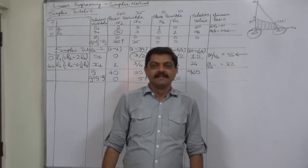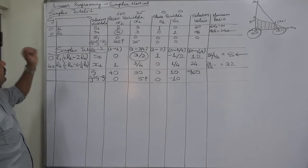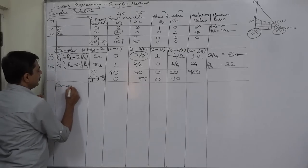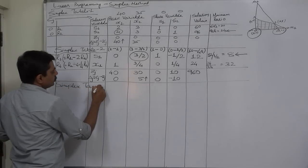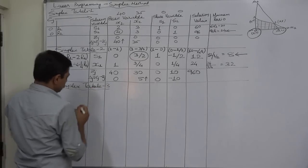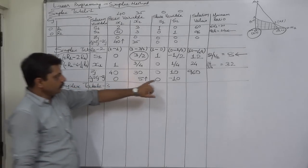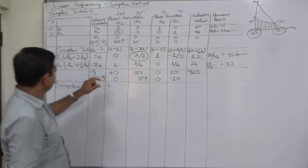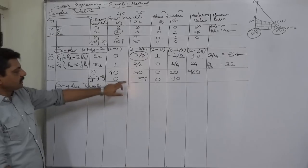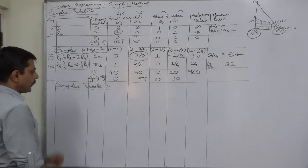Hello friends, welcome back. Now we are going to prepare simplex table 3. We have already prepared simplex table 1 and simplex table 2. We need to prepare simplex table 3 because at the end of simplex table 2 we arrived at the conclusion that the solution x1 equals 24, x2 equals 0 is not the optimal one, because still one value in the row delta J is positive.